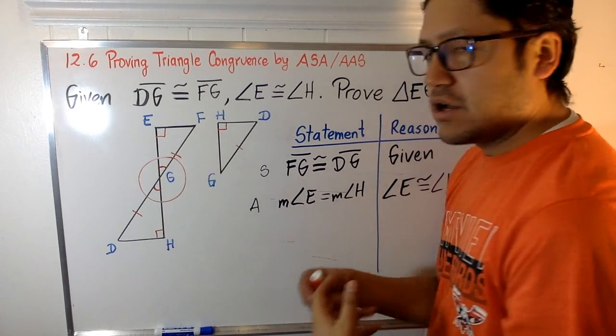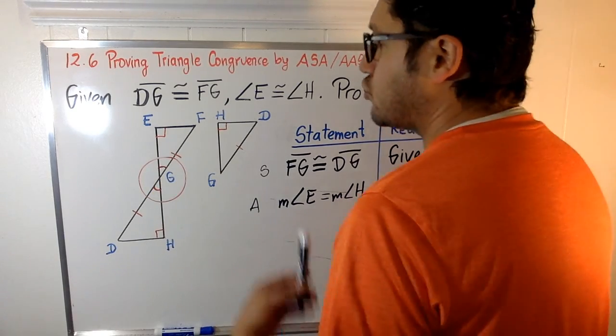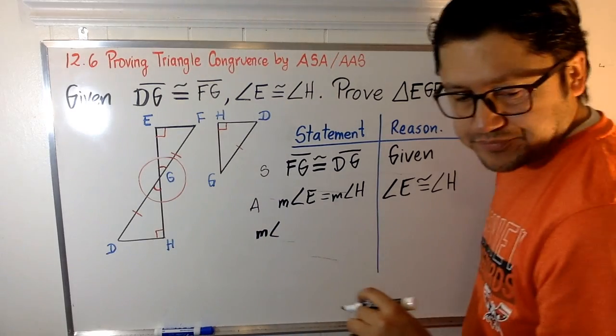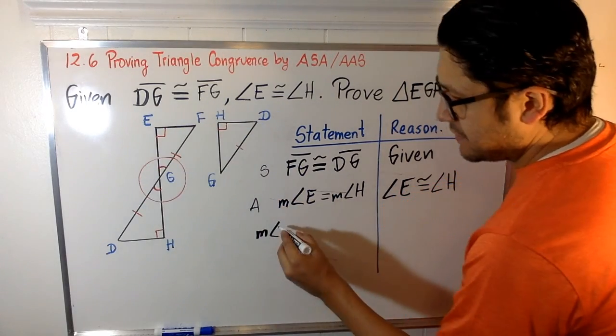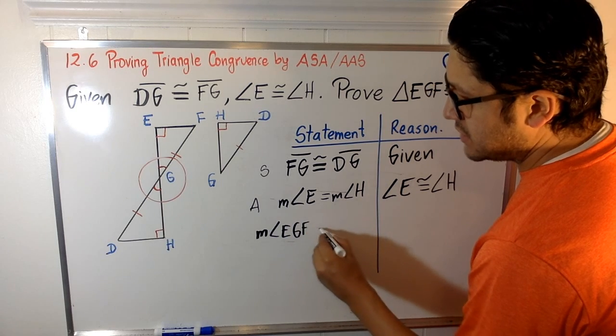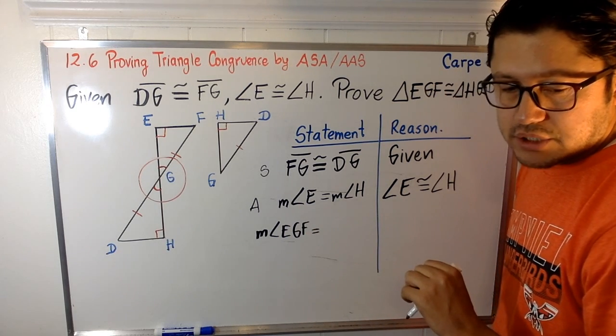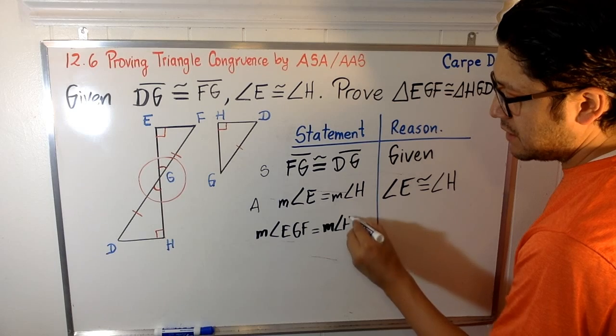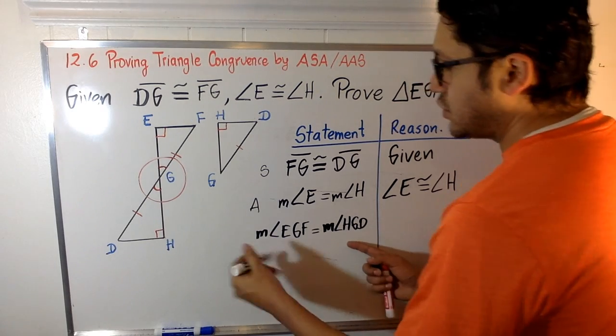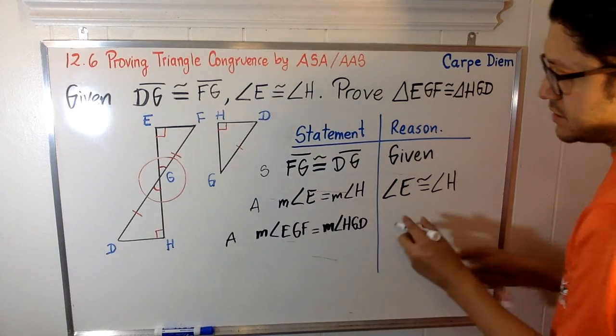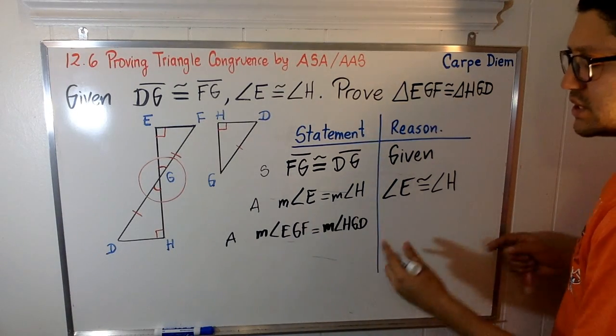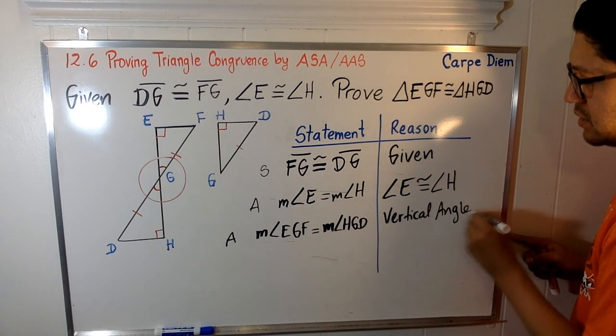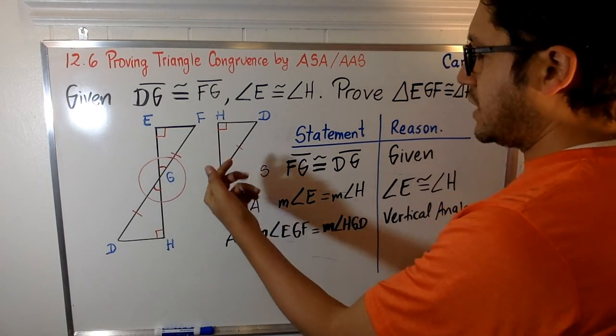So these angles, since they are vertical, they are congruent. So I can say, for example, that the measure of angle EGF is congruent to the measure of angle HGD. So if these two are congruent because they are, why can we say that? Because they are vertical angles. So now we have a segment and two angles.